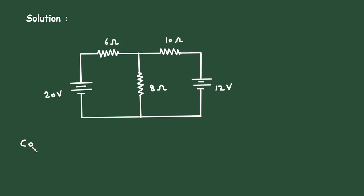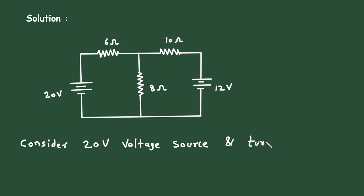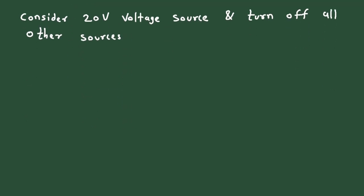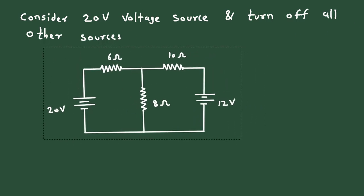Consider the 20 volt voltage source and turn off all other sources. When we turn off the voltage source, it will be a short circuit. This current through the 8 Ohm resistor will be I prime.